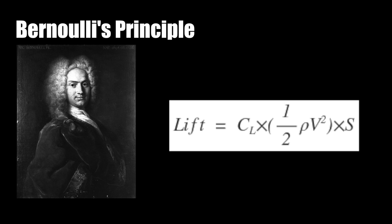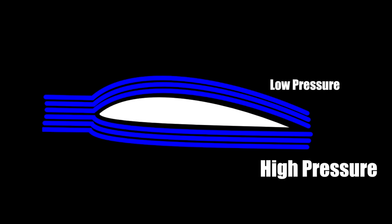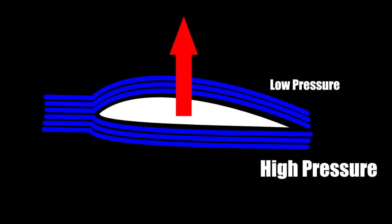Bernoulli's equation is not that complicated, but we don't need to actually understand it to answer this question. Just note that Bernoulli's principle states that when air flows around an airfoil, or a wing, the air going over the longest surface travels faster than the air travelling across a shorter surface. These two laminar flows over the wing's surface create a pressure difference that results in an upwards force.